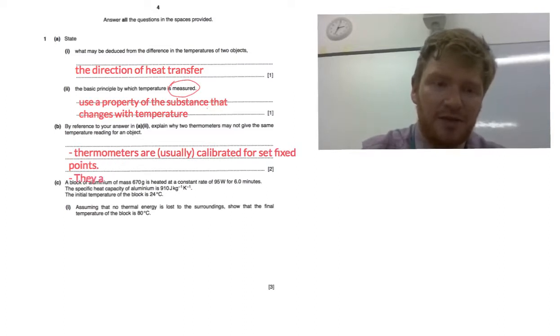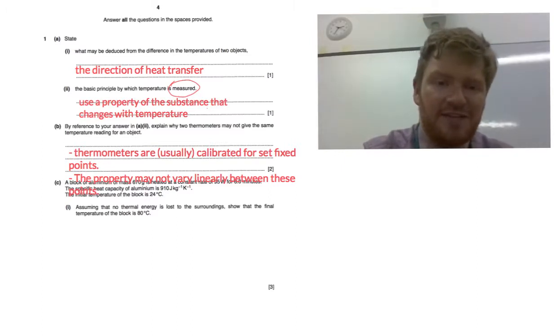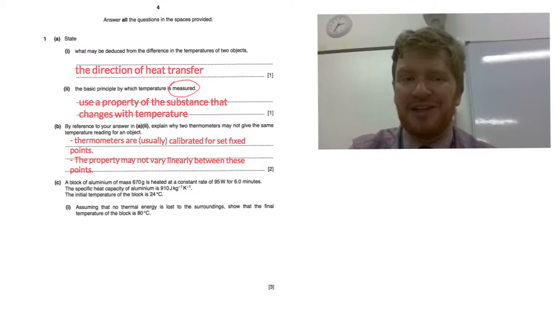So because you've calibrated them for set points, they may not be linear, or the property may not vary linearly between these points. So if that is the case, then what you find is that your thermometer, even if you've not perfectly accurately calibrated it, your thermometer may still give a wrong reading. Now, I know what you're thinking, that seems unfair, but actually it's quite important because that is how a real thermometer works. A real thermometer does rely on us calibrating it accurately and assuming linearity between these points, and you don't always get that. So, yeah, it's a mean one, but it's quite a good one.